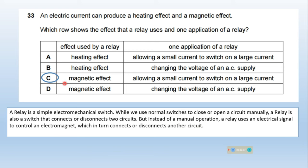The magnetic effect is the effect used by a relay, and the application is allowing a small current to switch on a large current. Option C is correct.